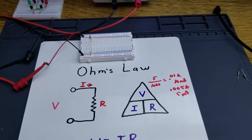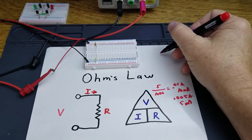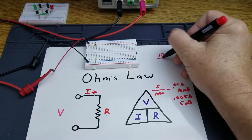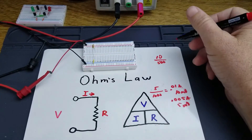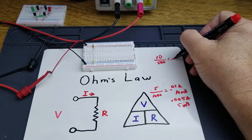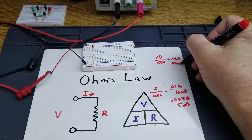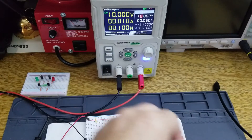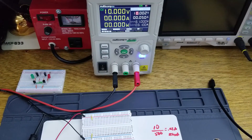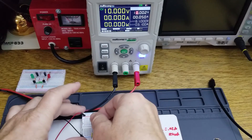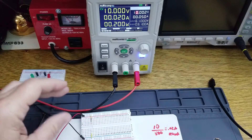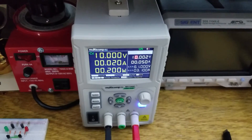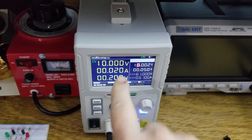According to Ohm's Law, if you have 10 volts divided by a 500-ohm resistor instead of a 1,000-ohm resistor, you should end up with 0.02 amps or 20 milliamps. Let's take the 1,000-ohm resistor out and replace it with a 500-ohm resistor. As you can see, it increased the current to 0.02 amps or 20 milliamps.